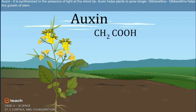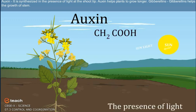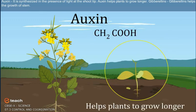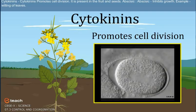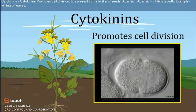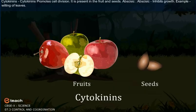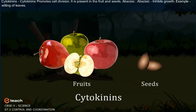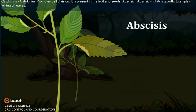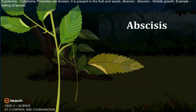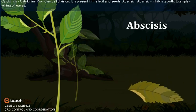Auxin is synthesized in the presence of light at the shoot tip and helps plants grow longer. Gibberellins help the growth of the stem. Cytokinins promote cell division and are present in fruits and seeds. Abscisic acid inhibits growth — an example is the wilting of leaves.